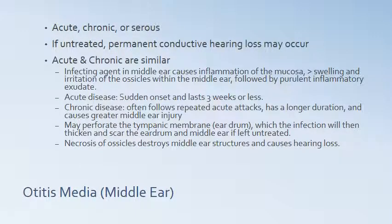Otitis media affects the middle ear and can be acute, chronic, or serous. If untreated, permanent conductive hearing loss may occur. Acute and chronic otitis media are similar: the infecting agent causes inflammation of the mucosa, swelling and irritation of the ossicles, and purulent inflammatory exudate. The acute disease has sudden onset lasting three weeks or less. Chronic disease often follows repeated acute attacks, lasts longer, and causes greater middle ear injury. Both may perforate the tympanic membrane, causing the infection to thicken and scar the eardrum and middle ear if left untreated. Necrosis of ossicles destroys middle ear structures and causes hearing loss.